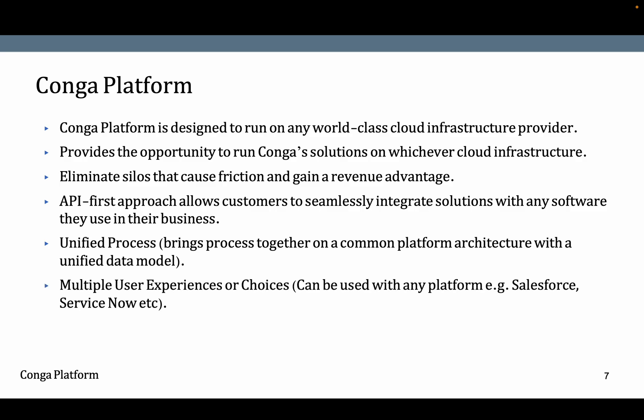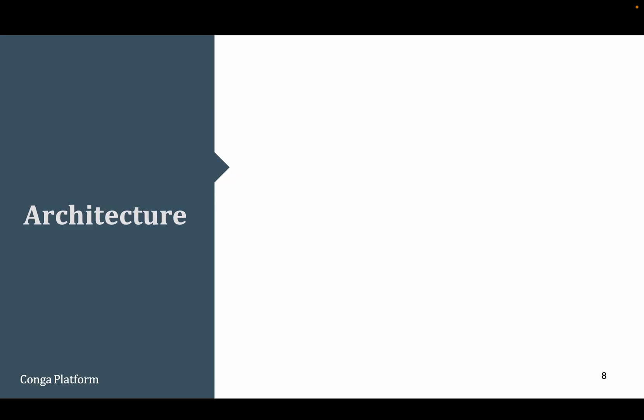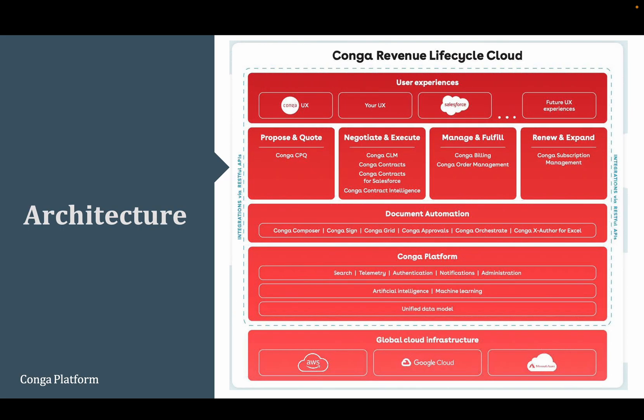Seamless integration of solutions is done using those APIs. The unified process brings everything together on a common platform architecture. It supports multiple user experience choices — it can be used with any platform, whether Salesforce, ServiceNow, Azure, AWS, or your own custom UI. Conga can be used anywhere and it is highly configurable.